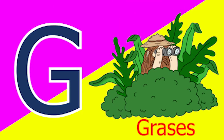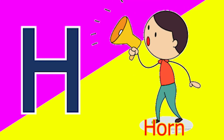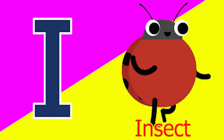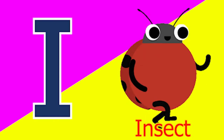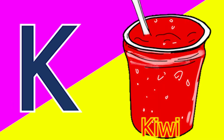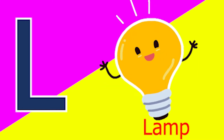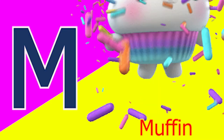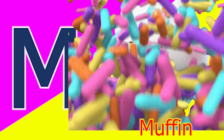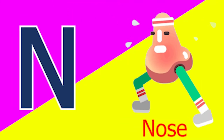G for glass and H for horn. I for insect, J for jam, K for TV, L for lamb, M for mud, N for nose.